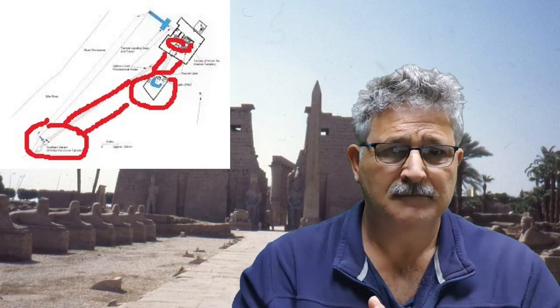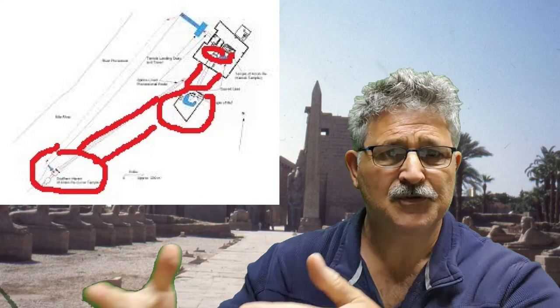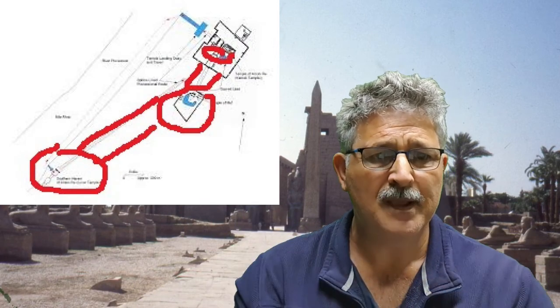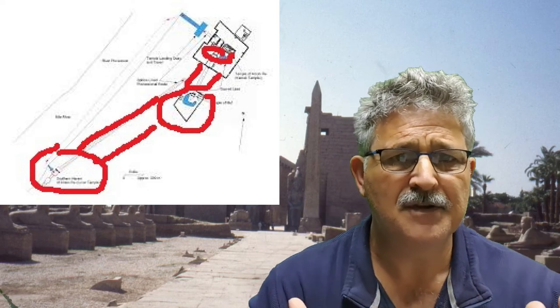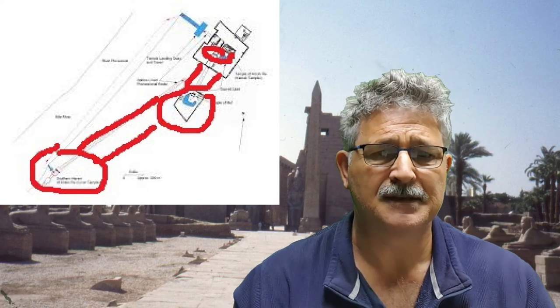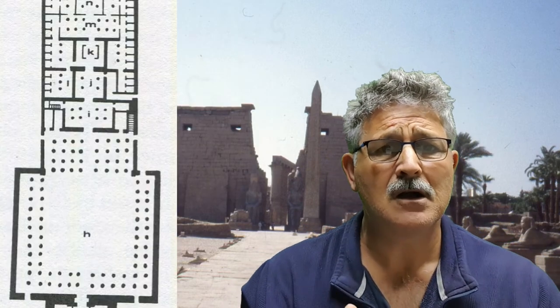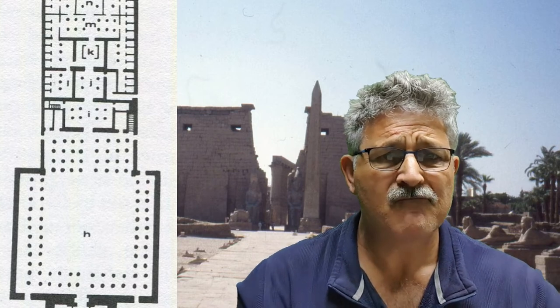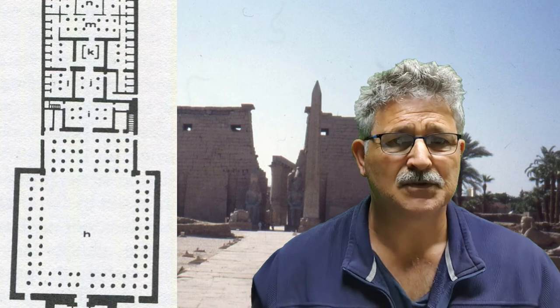During Hatshepsut's reign she starts building this southern harem for this new form of Amun, who is going to be able to seed the land. The Theban Triad would come down to the Opet Festival and unite with this other form of Amun who's able to seed the land. From this evolves the royal ka cult, which is about resurrection. So let's have a look at the history of Luxor Temple.